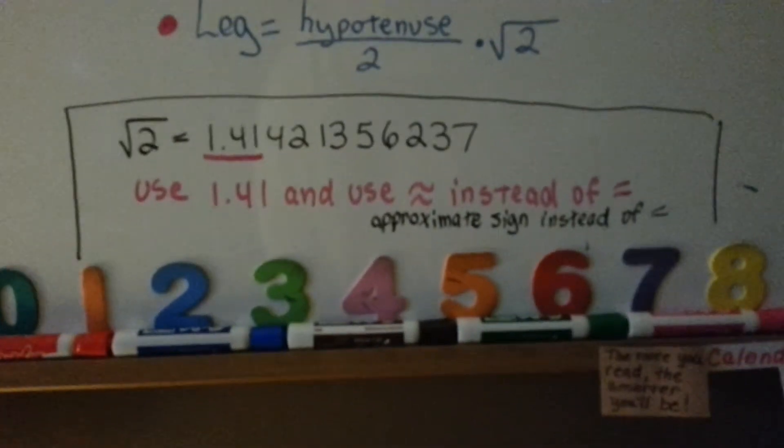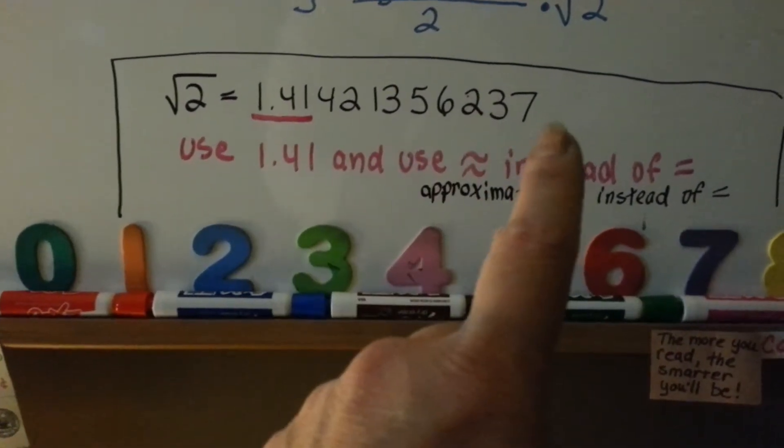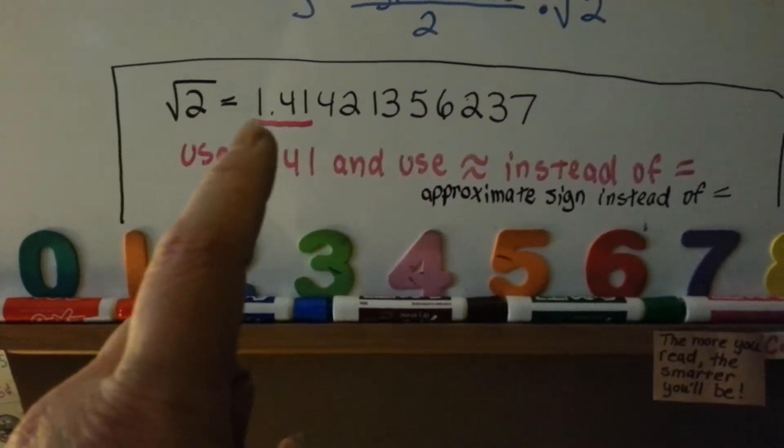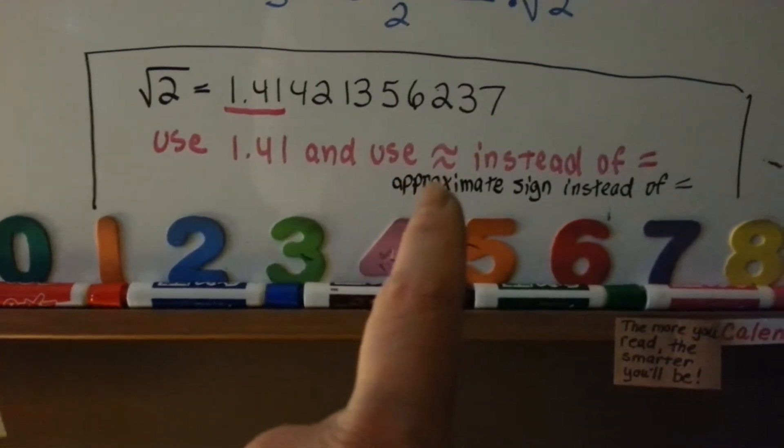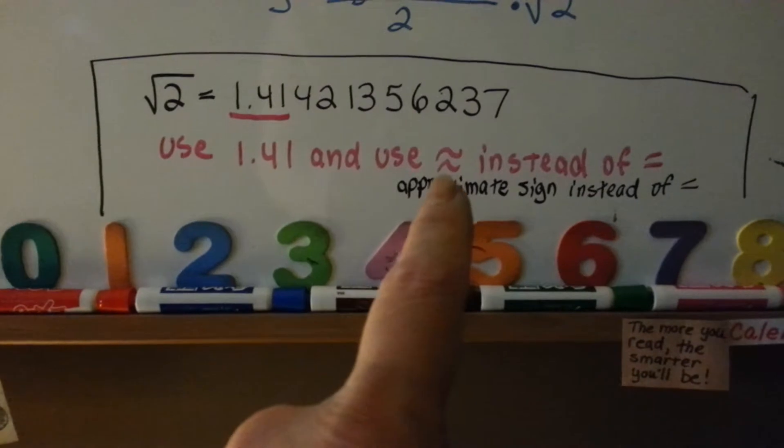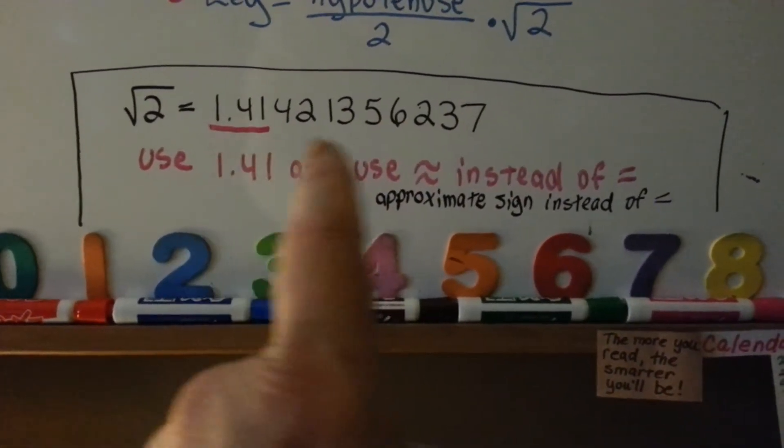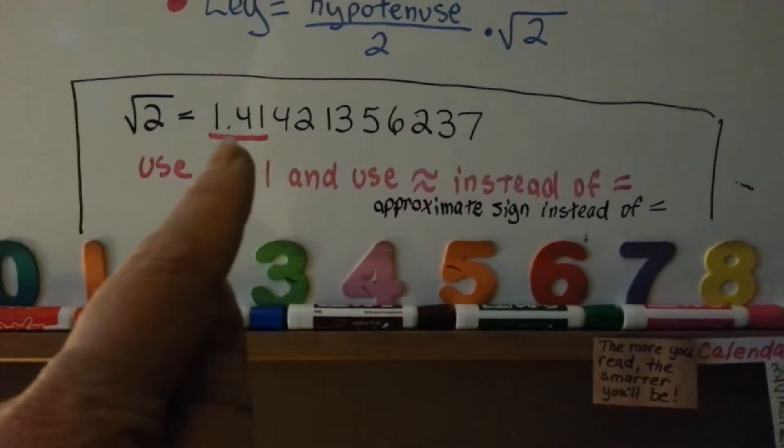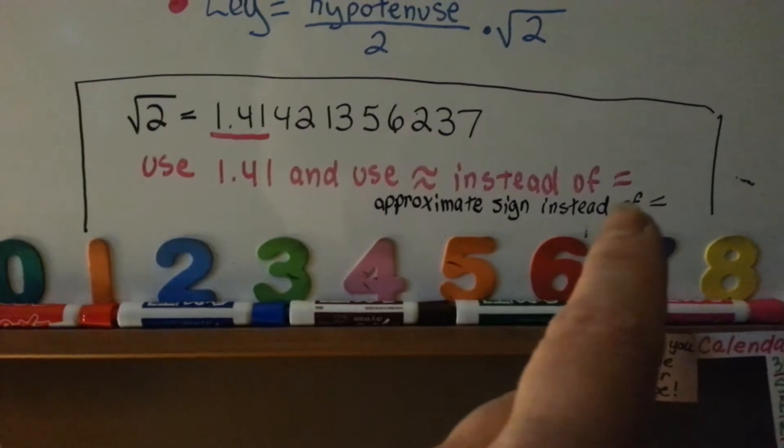So, what is the square root of 2? It's actually this big, long number. So, what you can do is just use 1.41. If you do, you must immediately stop using an equal sign and start using an approximate sign. Because you're doing it approximately, you're not doing it exactly. You would have to multiply it by exactly this entire big number to use the equal sign.